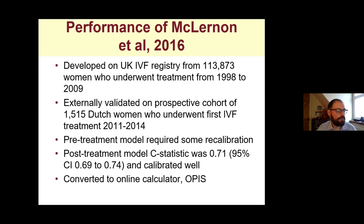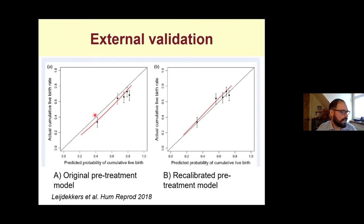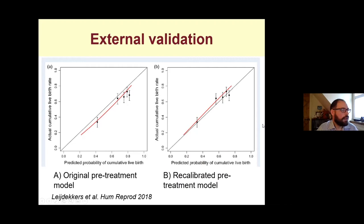We converted our models into an online calculator for use by patients or clinicians to predict cumulative live birth. The calibration plot for the pre-treatment model applied to the Dutch cohort showed some overestimation — the dots and red line fell just below the diagonal. Recalibration was applied, which multiplies the model coefficients by a small number to move all points onto the diagonal line, and it recalibrated quite well.